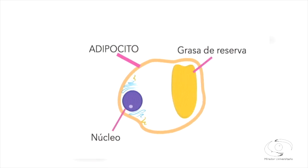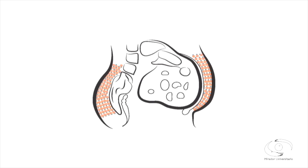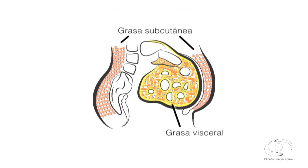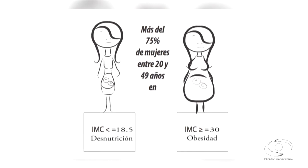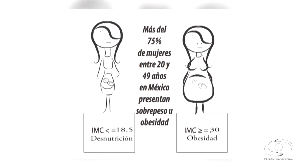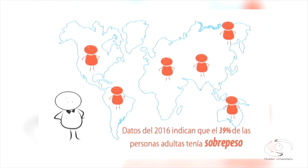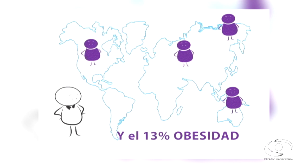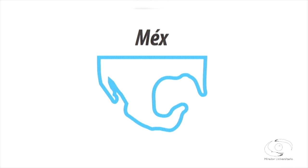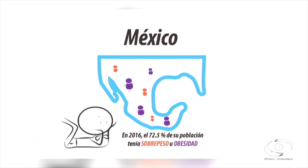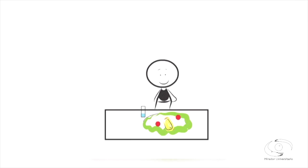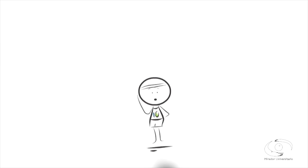La masa grasa es uno de los principales componentes de la masa corporal, constituida por el tejido adiposo, encargado de la reserva de energía metabólica para sobrevivir en periodos de ayuno prolongado. El Programa de Estrategias de Prevención de la Obesidad y Diabetes (INAM) estudia los efectos del estado nutricional materno y su repercusión en el metabolismo de la descendencia. En 2016, el 13% de la población mundial tenía obesidad; en México, el 72% tenía sobrepeso u obesidad. Recuerda consumir una dieta equilibrada y hacer ejercicio 30 minutos al día.